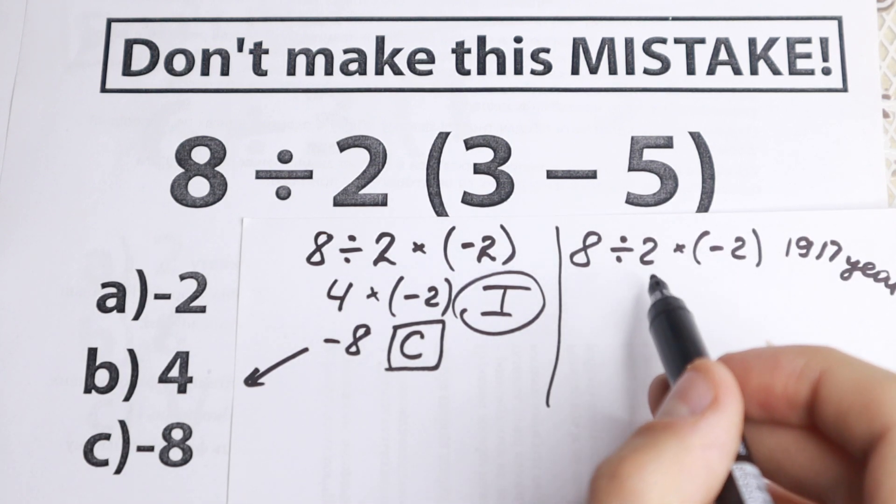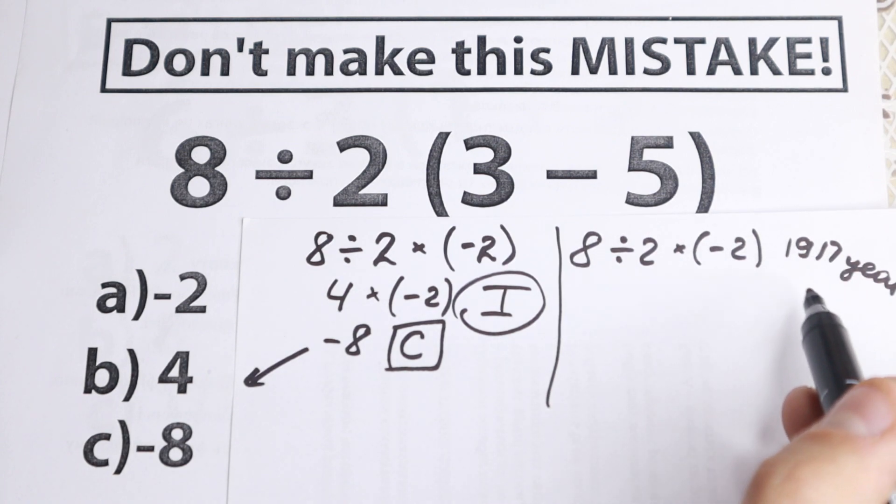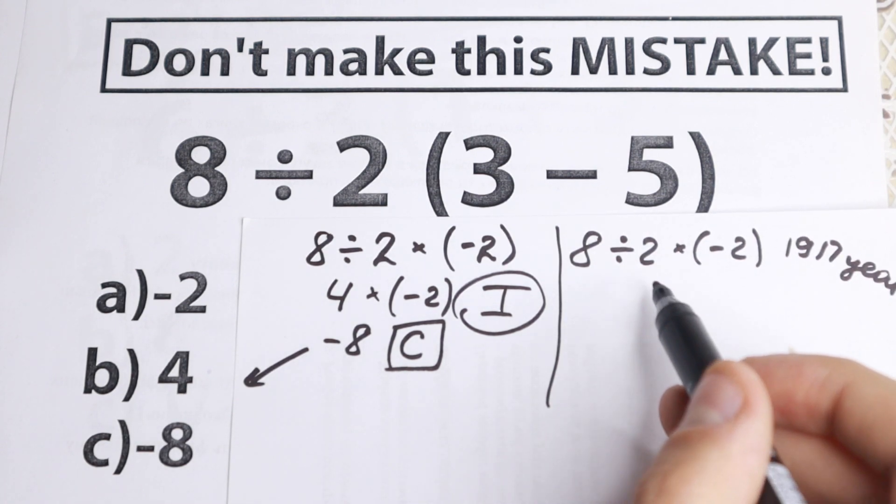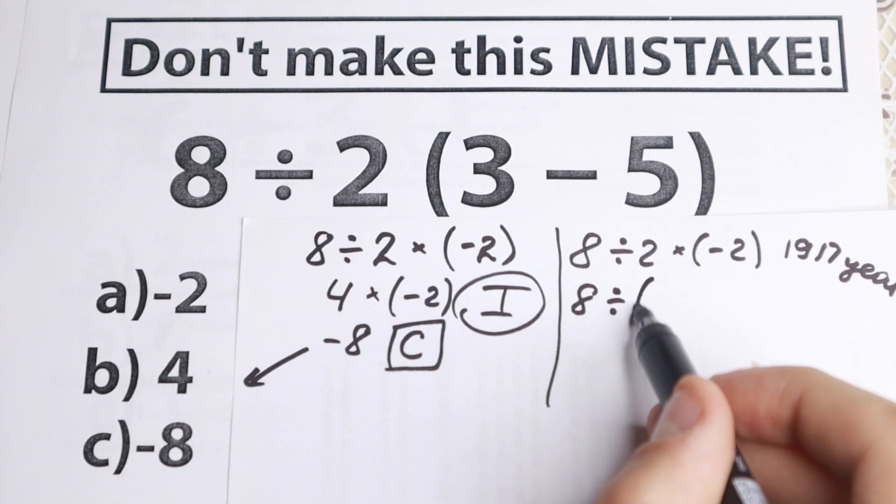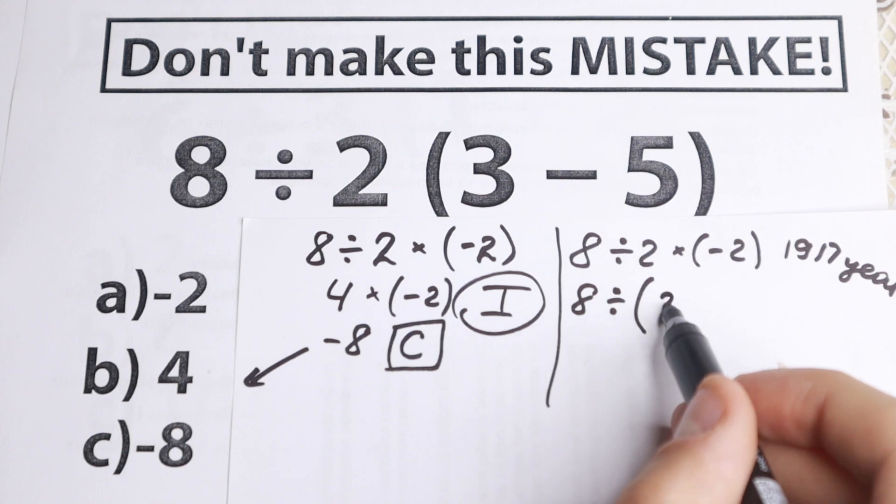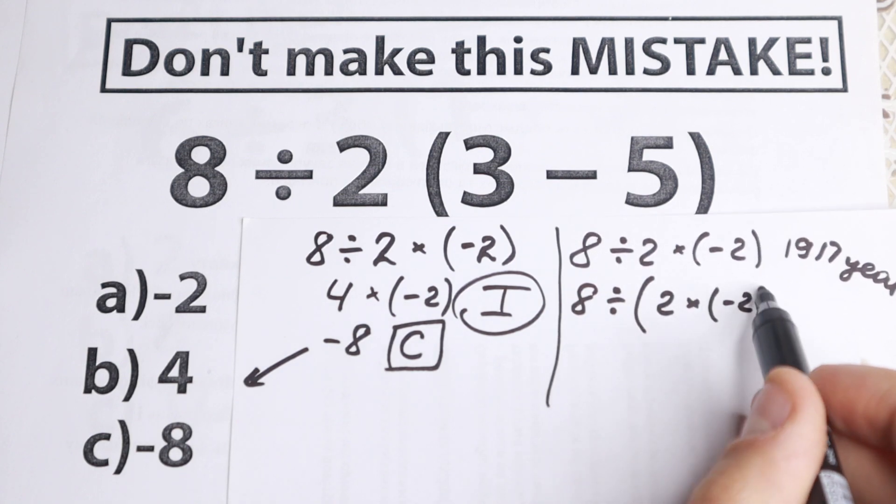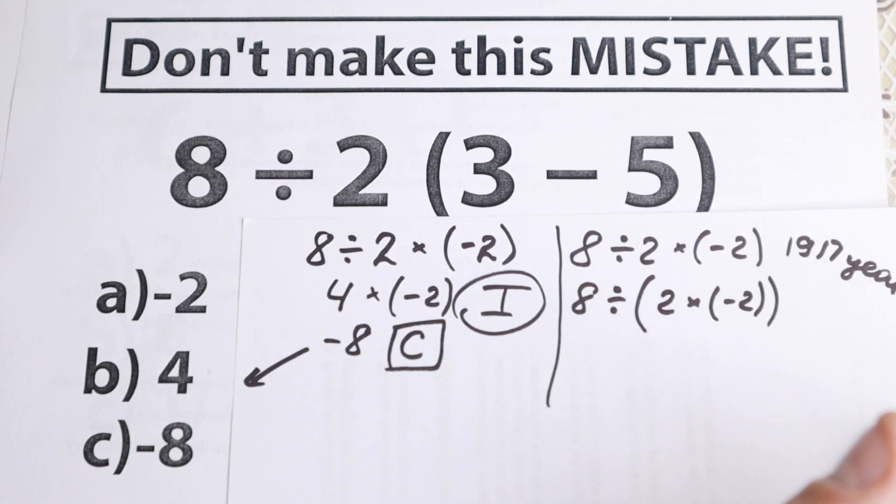So if you live like in 1917, you would multiply this as like that. So we will have like 8 dividing by the entire product. So you take it in parentheses. So 2 times minus 2. So it was 100 years ago.